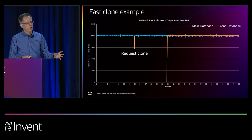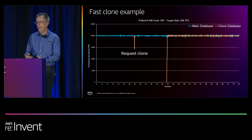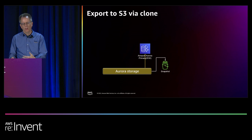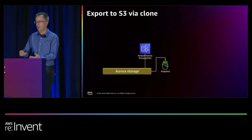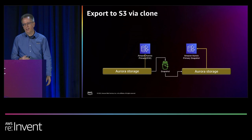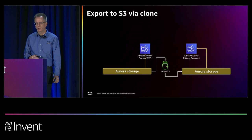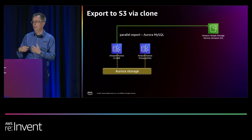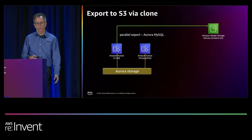The clone feature enables faster data export. The current export to S3 via snapshot requires restoring a snapshot to a new cluster and hydrating from S3 first, which takes time. With clones, you create a clone in Aurora and immediately start extracting data. On Aurora MySQL, we have a parallel export feature that can move terabytes very quickly to S3 in Parquet or CSV format — useful for CDC pipelines.